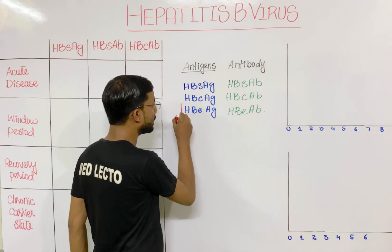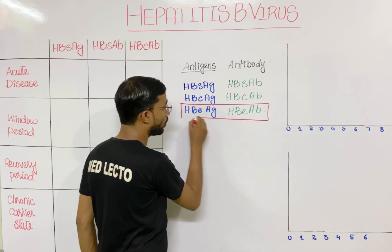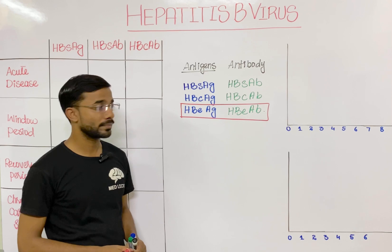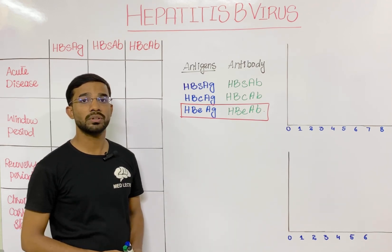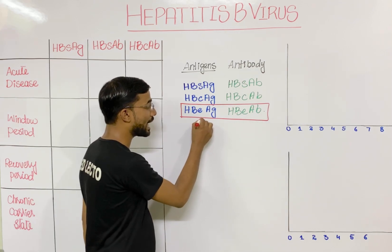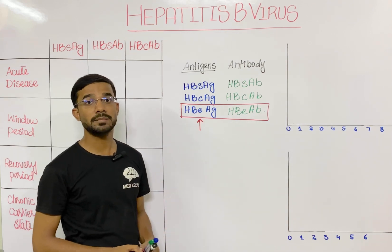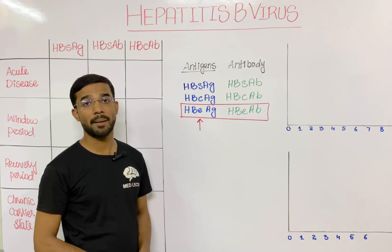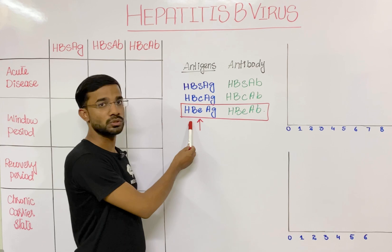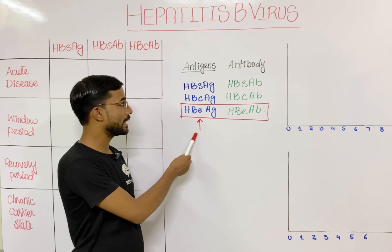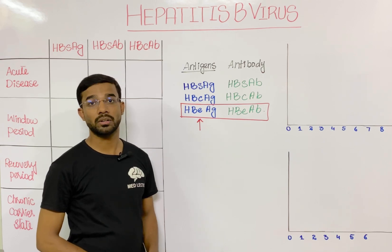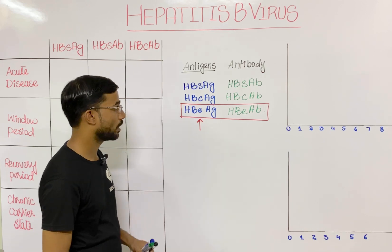The Hepatitis B e antigen and its antibody are not really performed in the lab, because they just show the transmissibility. If Hepatitis B e antigen is present, it means the patient can transmit the virus to others. It is not important in the diagnosis of acute and chronic Hepatitis B.